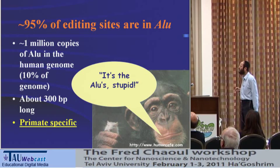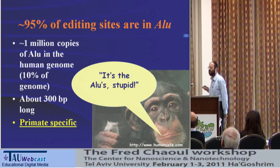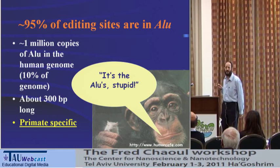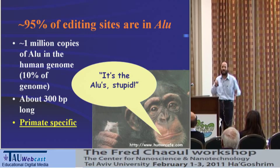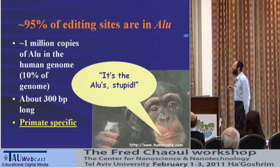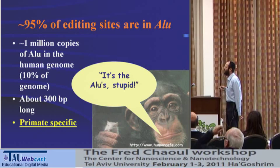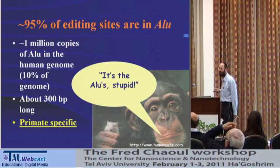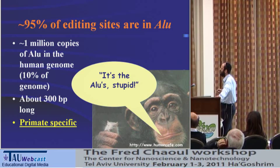Ninety-five percent of these sites are located in ALU elements. ALU is a repetitive sequence present in our genome with about one million copies, each about 300 base pairs long — so 10% of our genome is just the same sequence repeated one million times with minor changes. So 95% of the editing sites reside in this so-called junk DNA. Another thing to know about the ALU sequence is that it is primate-specific — it does not appear in mice, only in humans, chimpanzees, and other monkeys and primates.